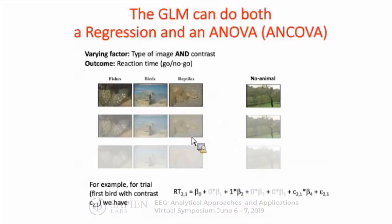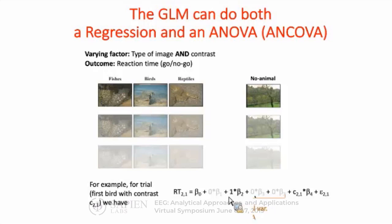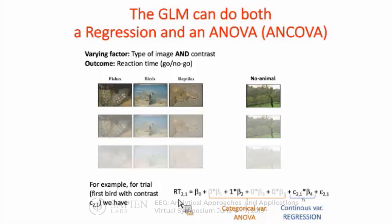The advantage of using this approach is that we can use ANCOVA, where we can model both the categories and, for instance, the level of contrast. It's very simple in the GLM — you just put all the beta parameters together. You'll have some beta parameters for the type of image and one beta parameter for the contrast. And again, if you want to know if a given parameter is significant, you just compare the model without those parameters and see if you have a better fit.